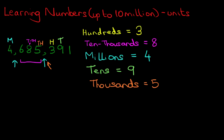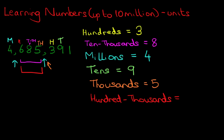Now suppose the next question is: how many hundred thousands are there in this number? We know the first comma, and we know that this is the thousands. The hundred thousands is to the left. So we've got hundred thousands, ten thousands, and thousands. There are six hundred thousands.